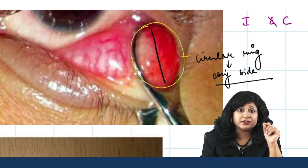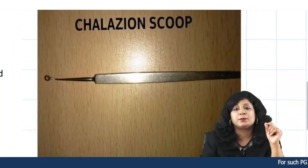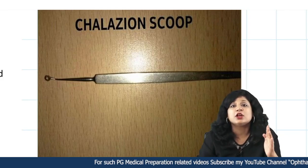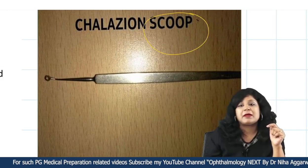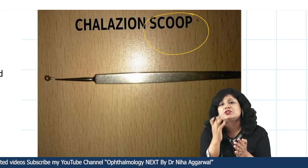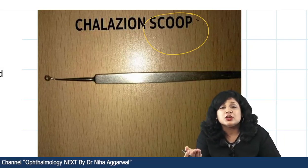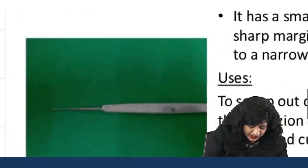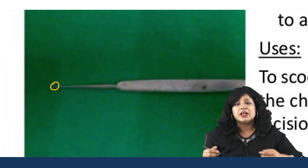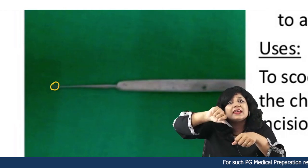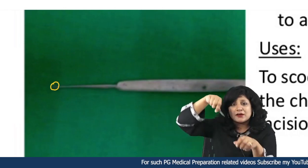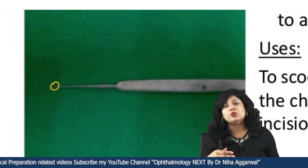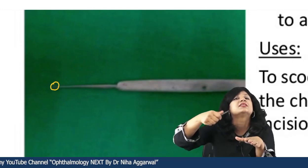The drainage is done with the help of a second instrument — the Chalazion scoop. Just as with the evisceration scoop, the shape of the instrument relates to its action. This scoop is used to curette the contents of the Chalazion. It usually has a large, stout handle because the working area inside the Chalazion is very small, so you have to work from a distance. Once you have applied the Chalazion clamp and given the vertical incision, you use the Chalazion scoop to remove the contents from the Chalazion.